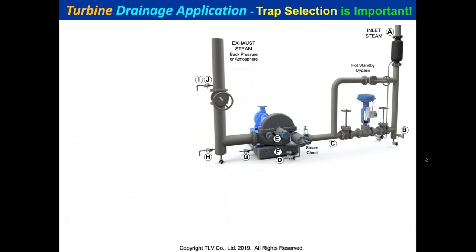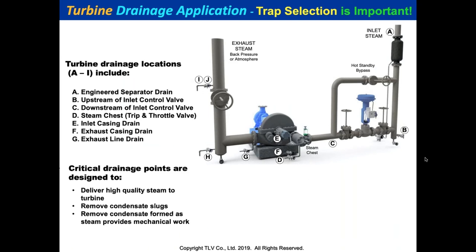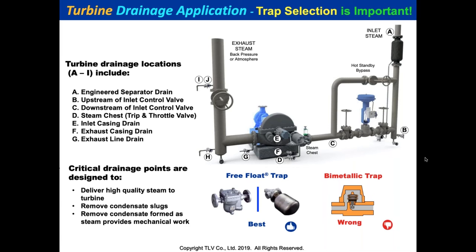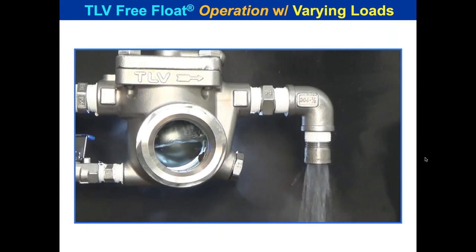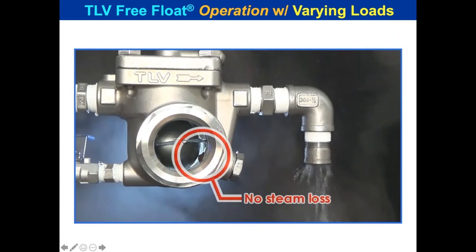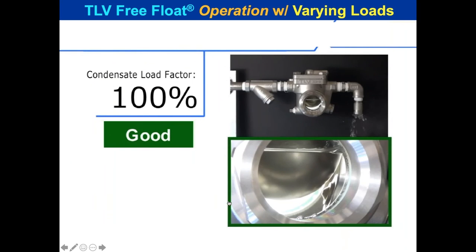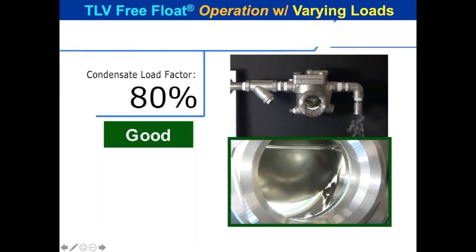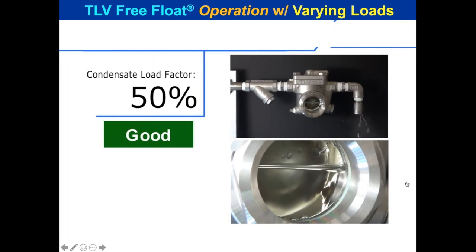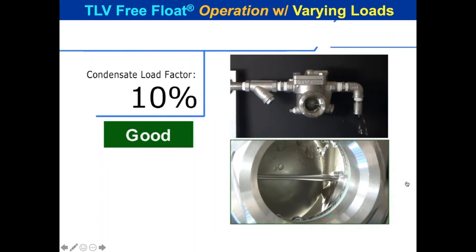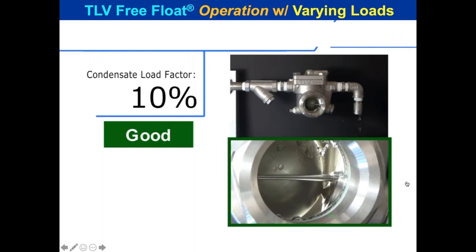We would never allow you to use one of our bimetal traps on a turbine system — we recommend free float traps. A free float trap with a window shows it maintains a water seal, always keeping steam at the top. Whether at 100%, 80%, or 50% of load, it always keeps a water seal over the orifice. The models we use for turbines are good for superheat — they have three-point seating for tight sealing even under superheat conditions.